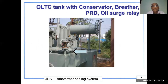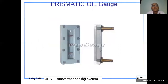You can see the conservator here, with the oil tank, conservator breather, and other associated components. Prismatic oil gauges are provided on top of the conservator so that for smaller units you can observe the oil level in the conservator.